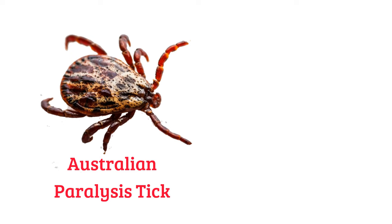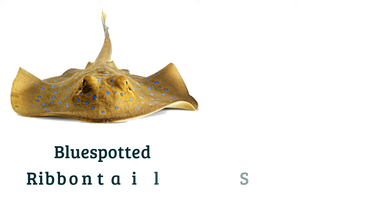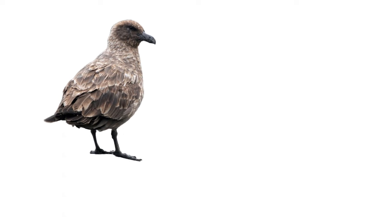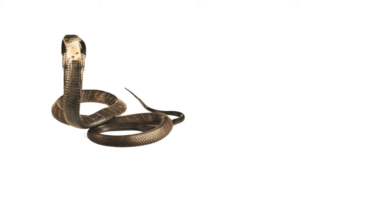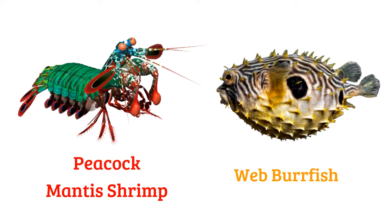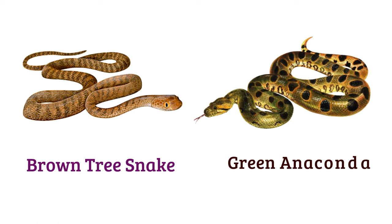Australian paralysis tick, cane toad, blue-spotted ribbontail stingray, boomslang. Brown recluse, hooded pitohui, king cobra, ghost bat, peacock mantis shrimp, Cannibal snake.